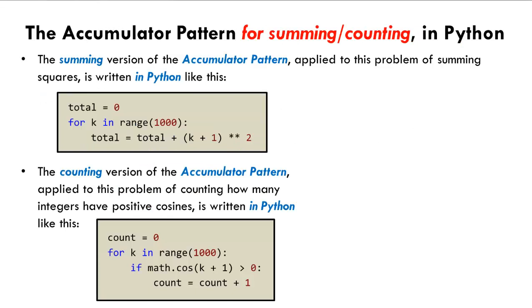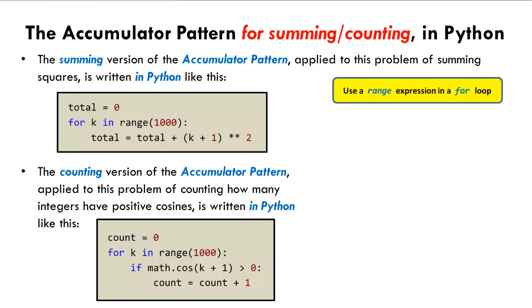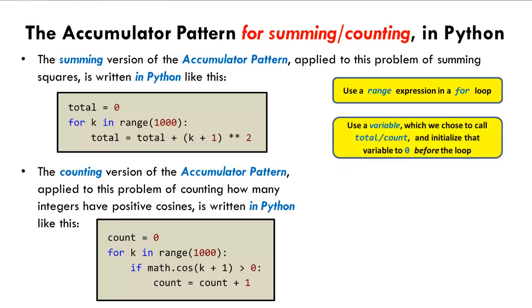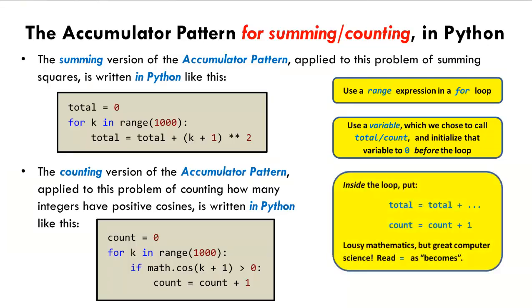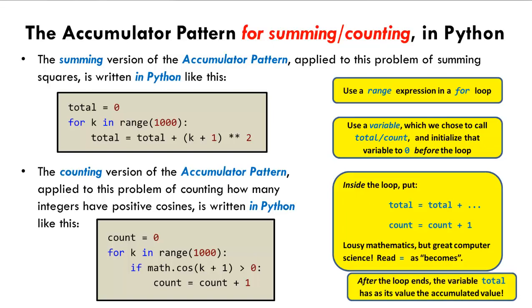So, here are the accumulator patterns for summing and counting in our examples. In both cases, there are three key features. First, we use a range expression in a for statement to make a loop run the number of times that the problem requires. Second, we use a variable called, say, total for summing or count for counting, and in both cases we initialize the variable to zero before the loop. Third, inside the loop, we write a statement of the form total equal sign, total plus something, where something is the next item of whatever we want to accumulate in our sum. Or, for counting, we use an if statement, and then count equal sign, count plus 1. In either case, the variable gets what the variable was plus some stuff. Then, after the loop ends, the variable total or count will have as its value the accumulated value.